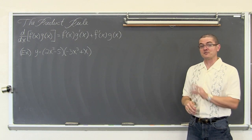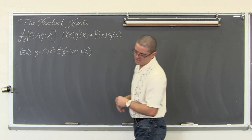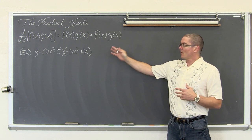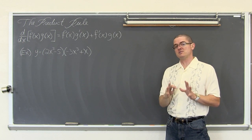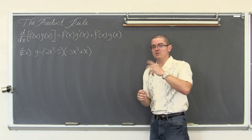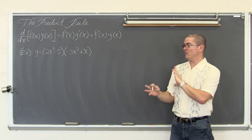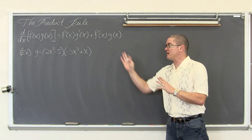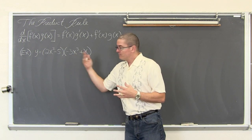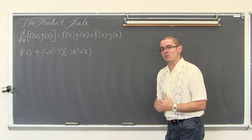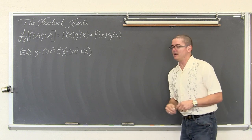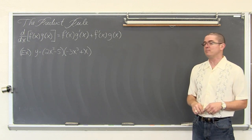We are going to do this first example only twice. This particular first example, we can either use the product rule or we can use the basic rules of differentiation. We are going to use the product rule first, and then I am going to show you that just because the problem looks like it requires the product rule, you may be able to manipulate it and just use one of the basic rules, which would make it quicker. So we have y equals 2x squared minus 5 times negative 3x cubed plus x.